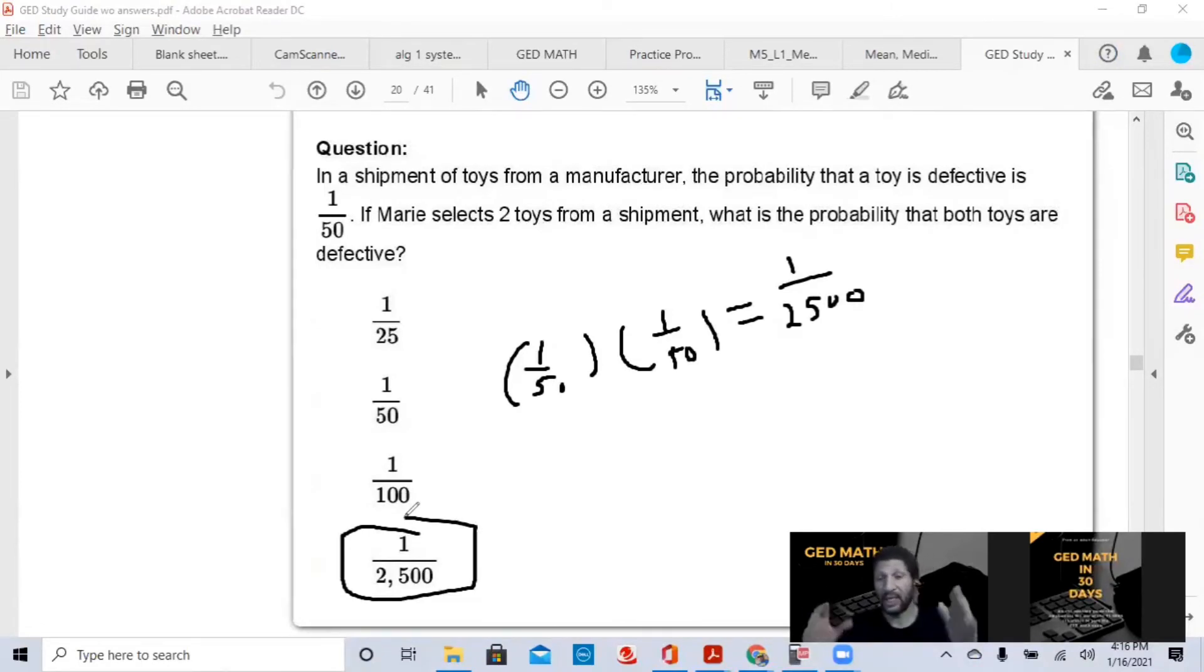That's a simple, fast lesson on probability. You can expect one to two questions at most, usually only one question on probability. So I'm going to keep this video short. Simple probability, the expected outcome over total outcomes. Compound probability is the chance of more than one event happening. So you find the simple probability of each event, and then you multiply. That simple.